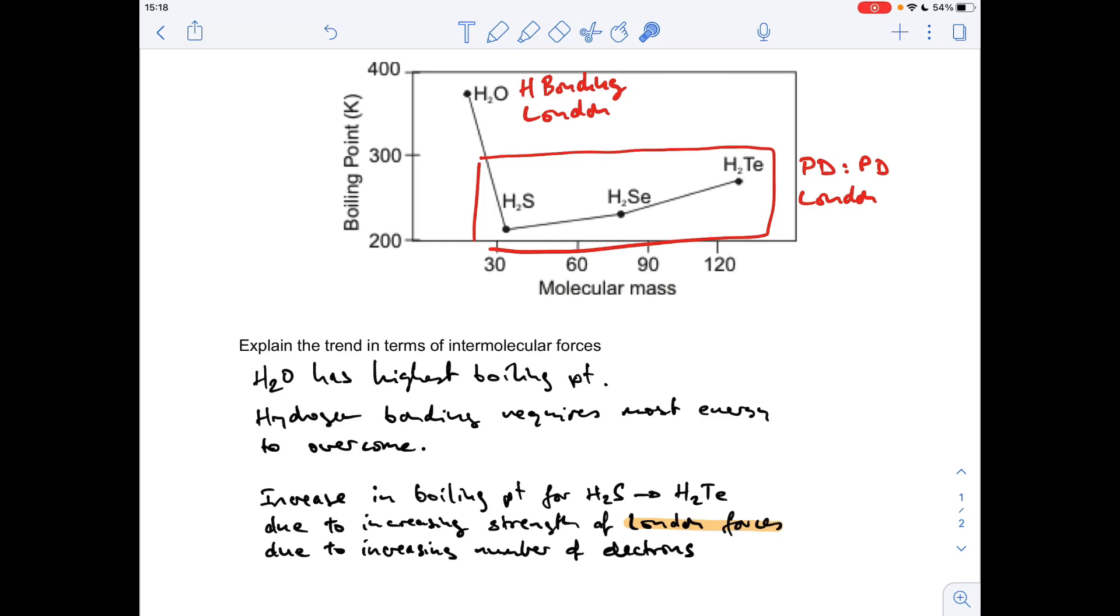So something like this will be fine. The increase in boiling point for H2S to H2Te is due to the increase in strength of the London forces. And that's due to the increasing number of electrons in the molecules.